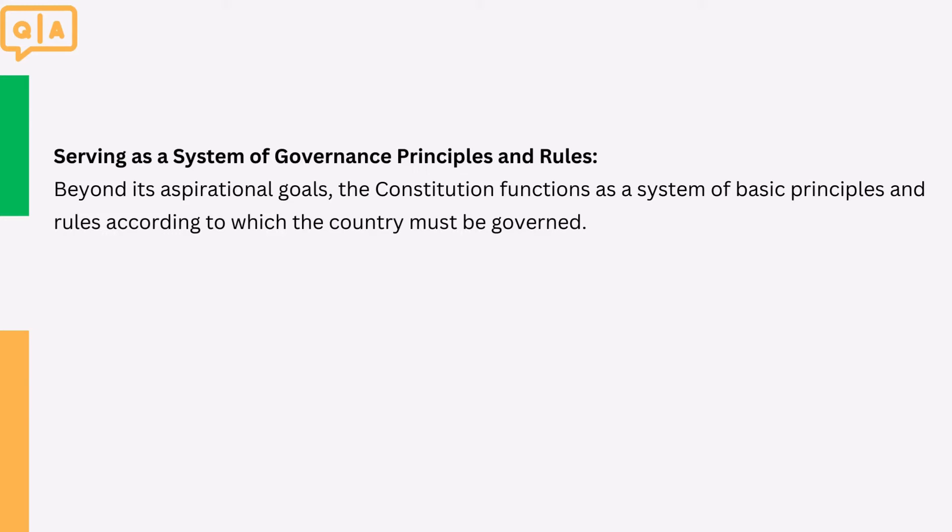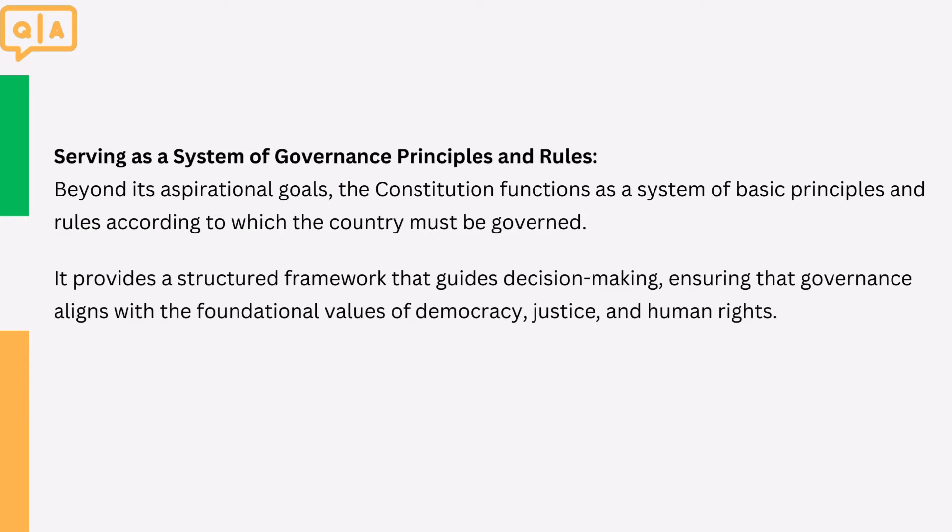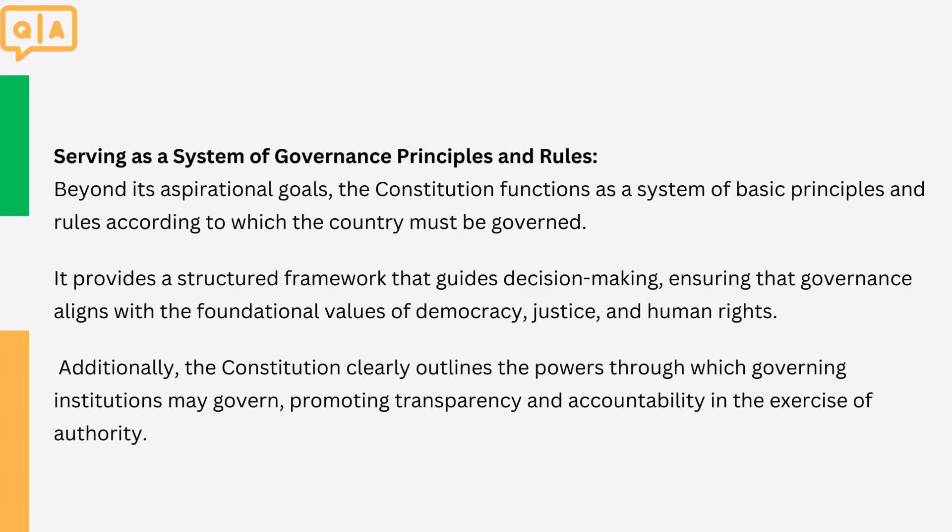6. Serving as a System of Governance Principles and Rules. Beyond its aspirational goals, the Constitution functions as a system of basic principles and rules according to which the country must be governed. It provides a structured framework that guides decision-making, ensuring that governance aligns with the foundational values of democracy, justice, and human rights. Additionally, the Constitution clearly outlines the powers through which governing institutions may govern, promoting transparency and accountability in the exercise of authority.